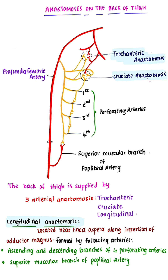The longitudinal anastomosis is located near the linea aspera, along the insertion of adductor magnus. It is formed by the ascending and descending branches of the four perforating arteries, and the superior muscular branch of the popliteal artery.